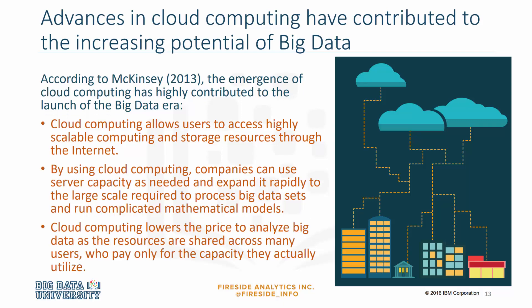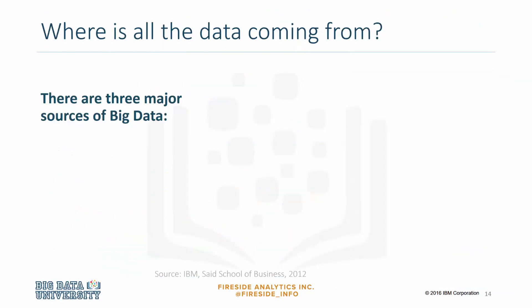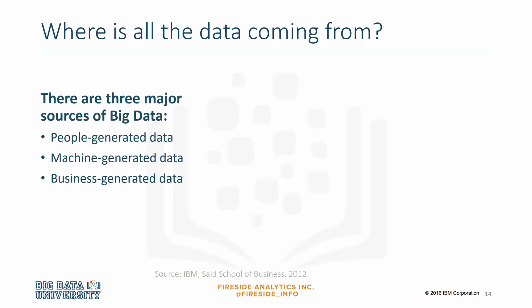Cloud computing lowers the price to analyze big data as the resources are shared across many users who pay only for the capacity they actually utilize. A survey by IBM and Saeed Business School identified three major sources of big data: people-generated data, machine-generated data, and business-generated data, which is the data that organizations generate within their own operations.